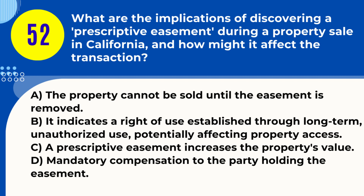Question 52. What are the implications of discovering a prescriptive easement during a property sale in California, and how might it affect the transaction? A. The property cannot be sold until the easement is removed. B. It indicates a right of use established through long-term unauthorized use, potentially affecting property access. C. Mandatory compensation to the party holding the easement. Answer: B. It indicates a right of use established through long-term unauthorized use, potentially affecting property access. Explanation: A prescriptive easement in California, gained through long-term use, can affect a property's access rights, and should be disclosed in the transaction.